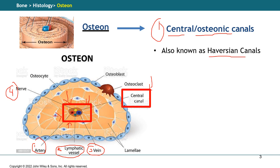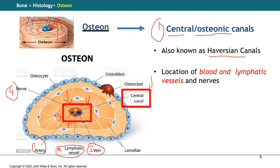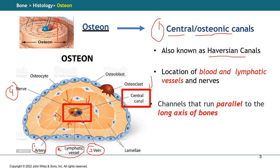One additional thing about the central canal is that it runs parallel to the long axis, going all over the osteon. There are different components located inside the central canal that are fundamental for the survival of the osteons and the bones — for example, the different blood vessels and the lymphatic system. The central canal runs parallel to the long axis of the bones.